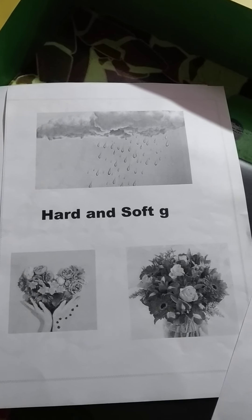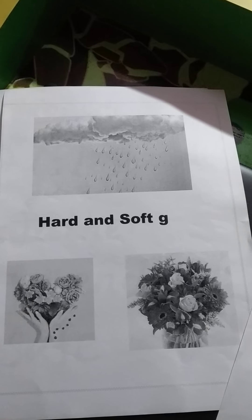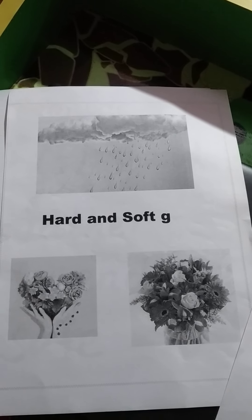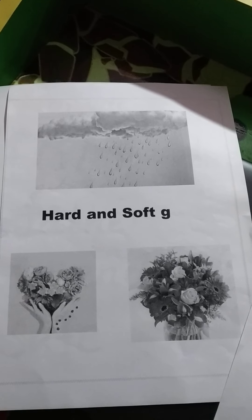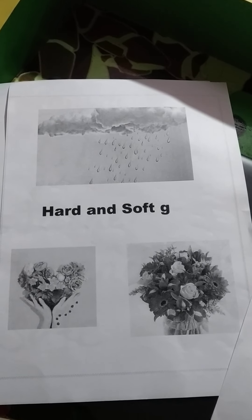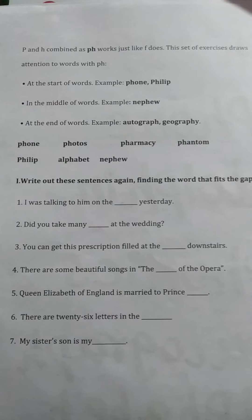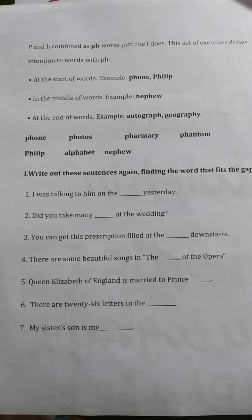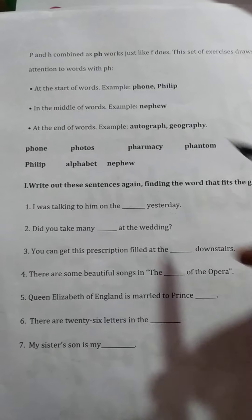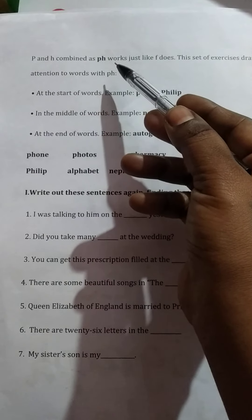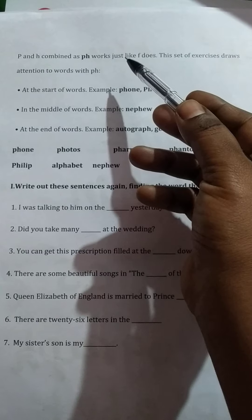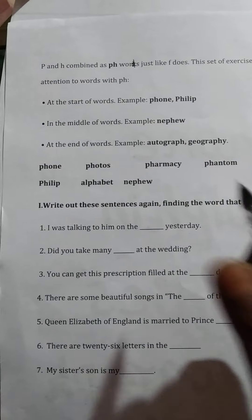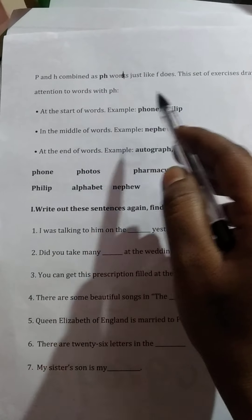If it produces a G sound, it is SOFT. If it produces a GH sound, it is HOD. Let's recall this. I am explaining to you, children, how to do the worksheet. Listen and then write it yourself. P and H combined as PH words, just like F does. This set of exercises draws attention to words with PH.